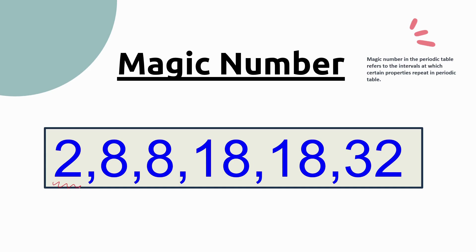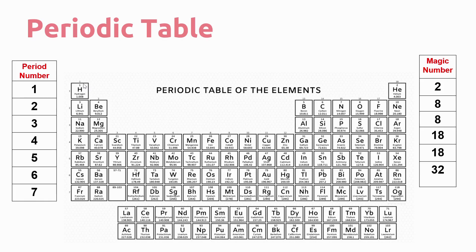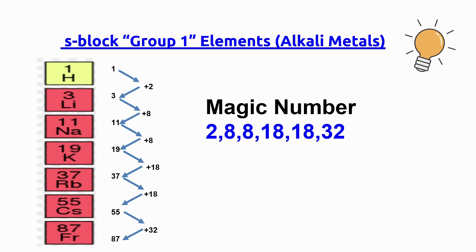Period 1 contains 2 elements, period 2 contains 8 elements, period 3 contains 8 elements, period 4 contains 18 elements, period 5 contains 18 elements, and period 6 contains 32 elements. As you can see, period 1 has 2 elements, period 2 has 8, period 3 has 8, period 4 has 18, period 5 has 18, and period 6 has 32. So we have to learn the magic numbers till period 6. Now I will tell you how to find out the atomic numbers with the help of the magic number concept.